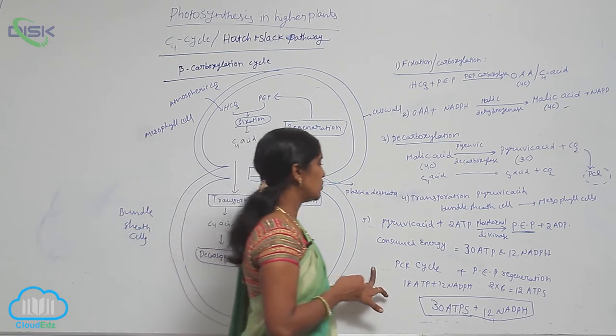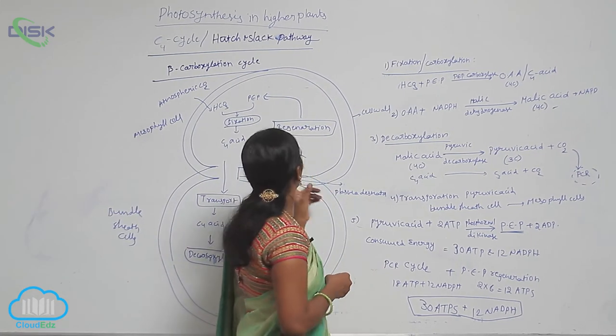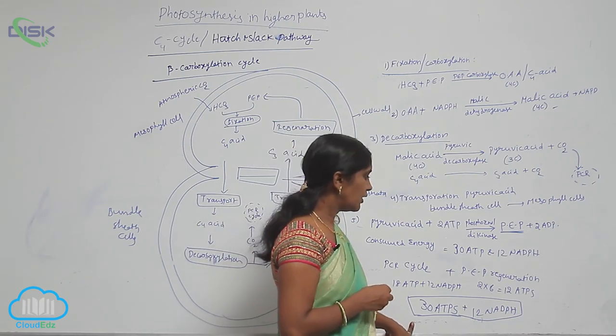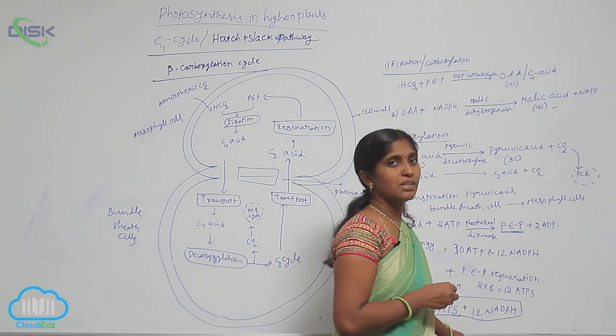Total consumed ATP and energy for doing one C4 cycle: here 13 ATPs and 12 NADPs are required.